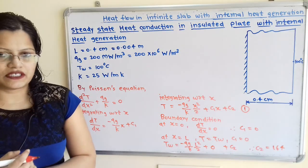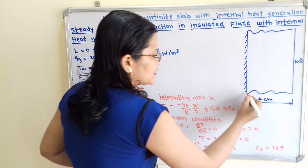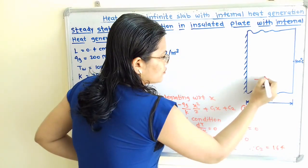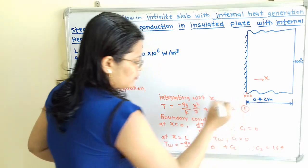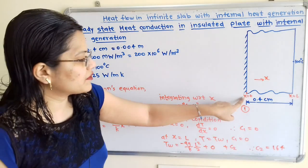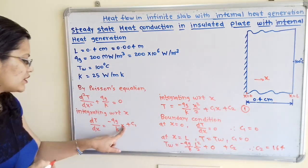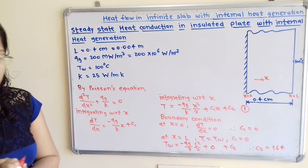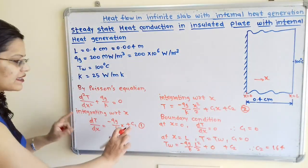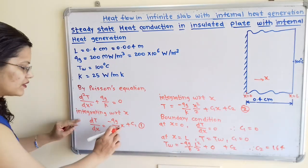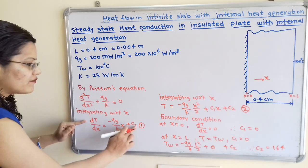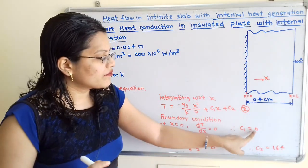Now we will apply the boundary conditions. The total thickness is 0.4 cm and heat flows in the direction of x, so at the insulated end x is equal to 0 and at the other end x is equal to L. The first boundary condition is at x equal to 0, dT by dx is also equal to 0. Substituting into equation 1, we get C1 equal to 0.